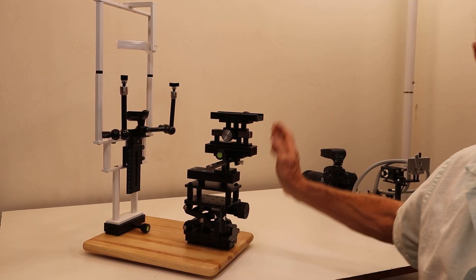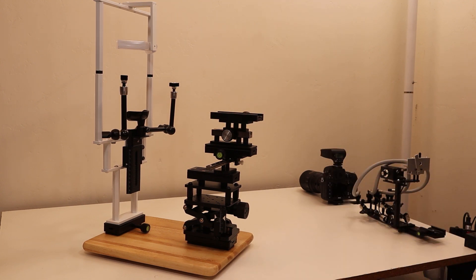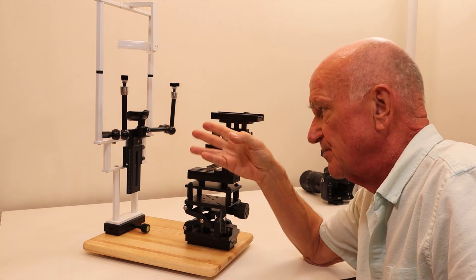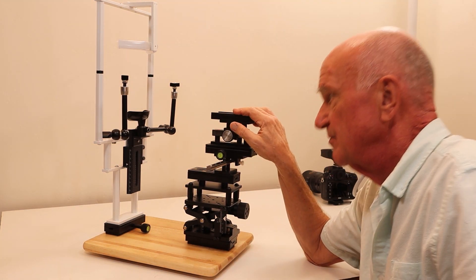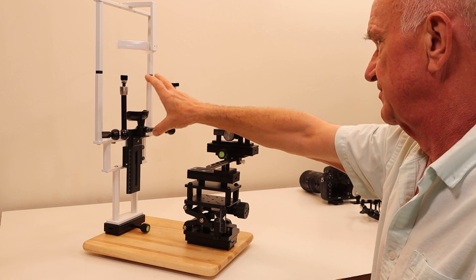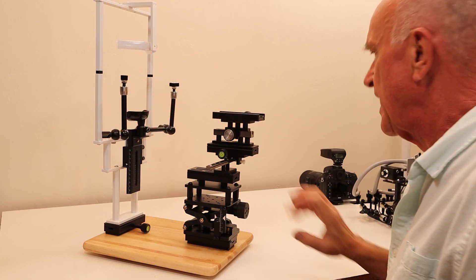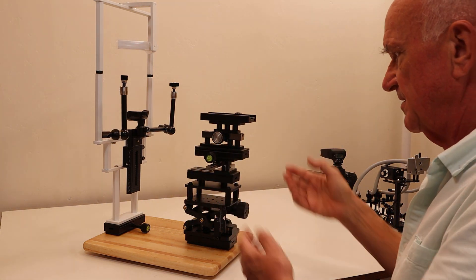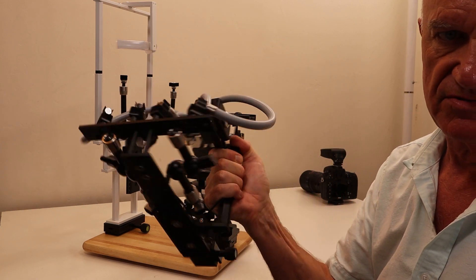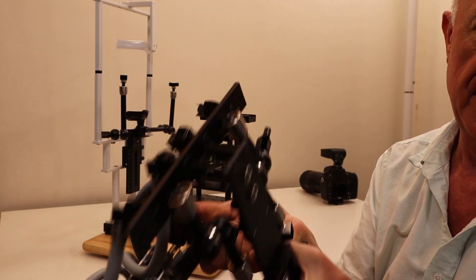This is the newest chin rest - I call it the Miles Eye Camera Support. It supports the camera, the eye camera, and it also holds the person's head stabilized to get good pictures. Normally this will be offered along with an illuminator, which is the newest style.